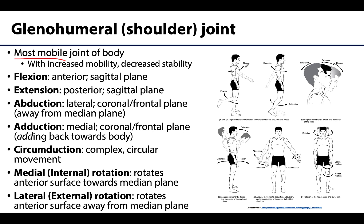Flexion is the movement that brings the arm into a more anterior position in the sagittal plane — if you're pointing right in front of you, you are flexing your arm. An important note: when you hear descriptions of movements at the shoulder joint, you may hear both 'flexion of the shoulder joint' and 'flexion of the arm,' and these two terms mean the same thing since you can't move the shoulder without bringing the arm with it.